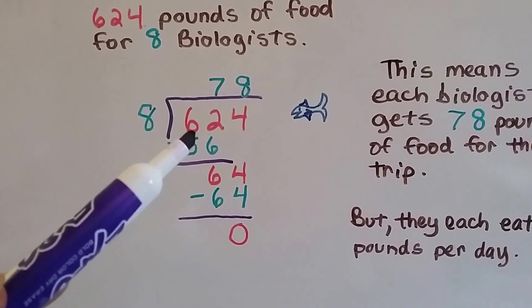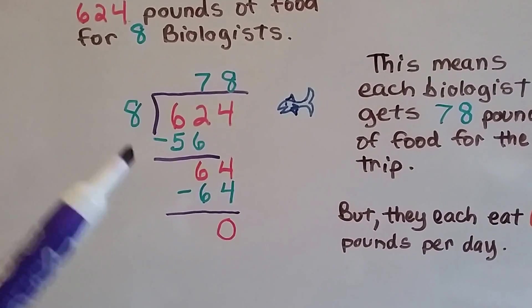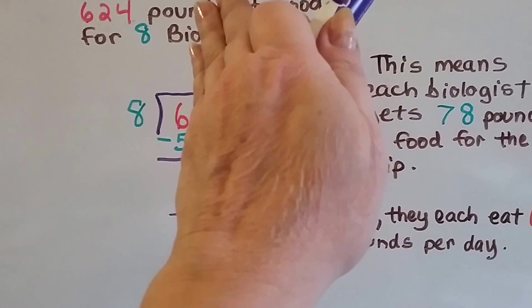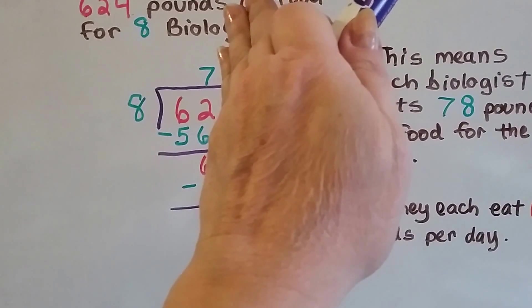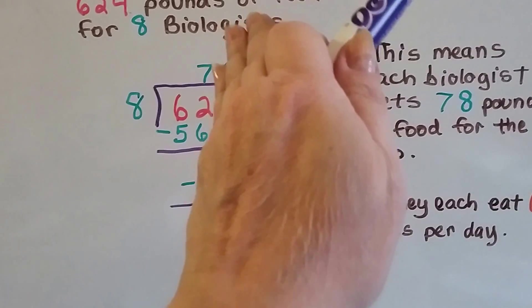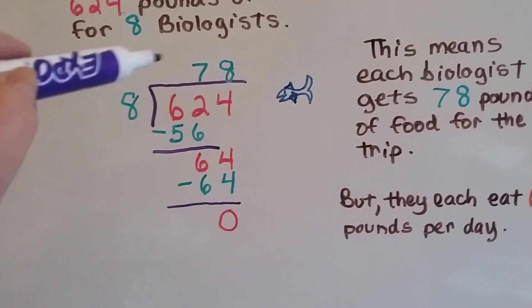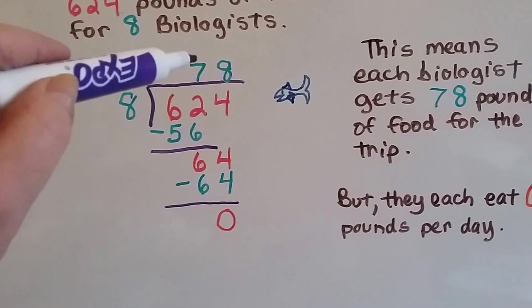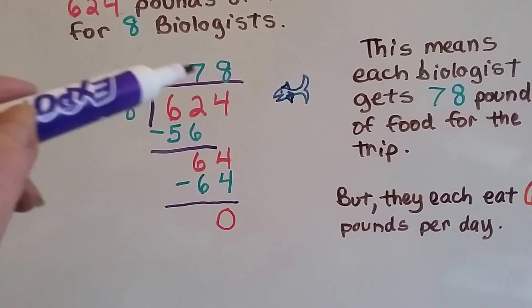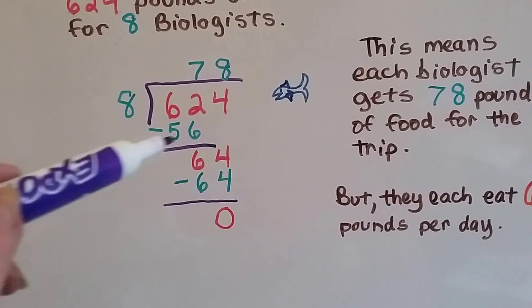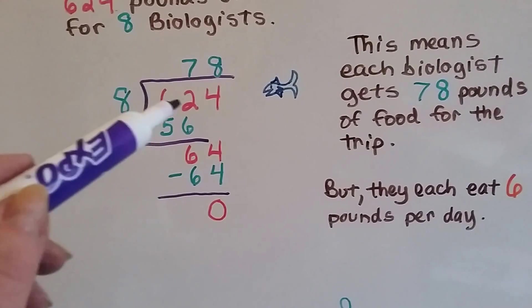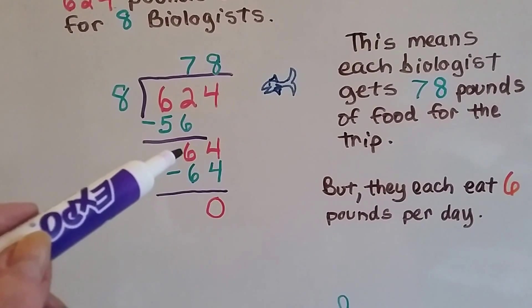So we have 624 and we're going to divide it by eight. So eight can't go into six, but it can go into 62. Eight goes into 62 seven times. So we put the seven above the two, because that's what we're dividing into, not the six. It goes up here above the two, and eight times seven is 56, and we subtract that from this amount. 62 minus 56 leaves 6.